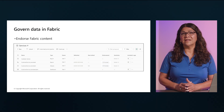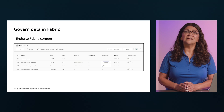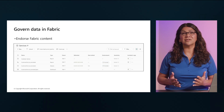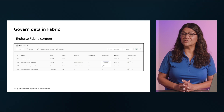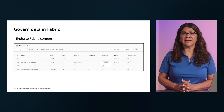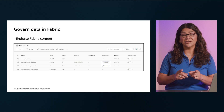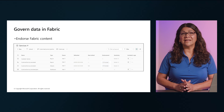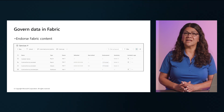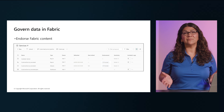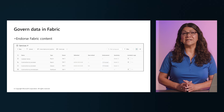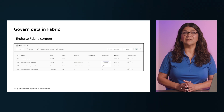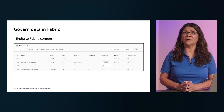Content certification is a more formal process that involves a review of the content by a designated reviewer. Certified Fabric content appears with a certified badge in the Fabric portal. The certification process is managed by the admin and can be customized to meet the needs of your organization. If you aren't an admin, you need to request item certification from an admin by selecting the item in the Fabric portal and then selecting Request Certification from the More menu.